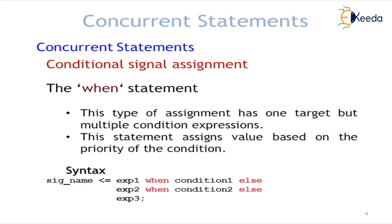Depending on the expression priority, a value is assigned. The syntax is: the target signal name, then expression one assigned to the signal when condition one is true. When condition one is true, expression one is assigned to the target. If it is false, it checks the second condition. If that is also false, it assigns the final value, expression three, to the target. Note there is no comma or semicolon between when-else clauses — only a semicolon at the very end.